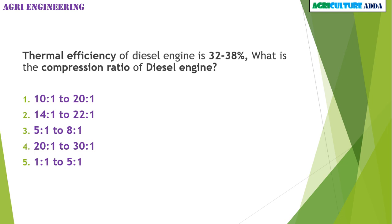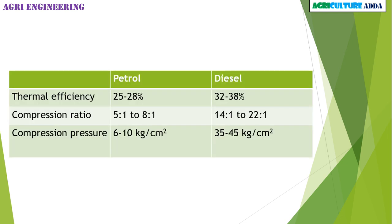In allied subjects — agriculture engineering: the thermal efficiency of a diesel engine is 32–38%. What is the compression ratio of a diesel engine? Options are 10:1–20:1, 14:1–22:1, 5:1–8:1, 20:1–30:1, or 1:1–5:1. The answer is 14:1 to 20:1. For petrol engines: thermal efficiency 25–28%, compression ratio 5:1–8:1, compression pressure 6–10 kg/cm². For diesel engines: thermal efficiency 32–38%, compression ratio 14:1–20:1, compression pressure 35–45 kg/cm².